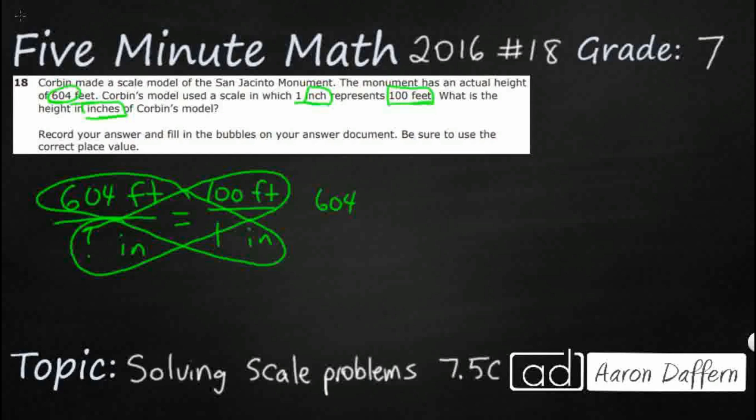So I'm just going to write 604 equals 100 times inches. If I want to find my inches and that's my variable here, then I just need to divide both sides by 100. That cancels itself out, and I need to divide 604 by 100.